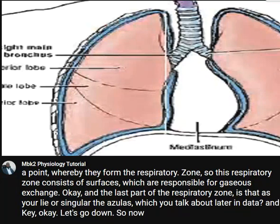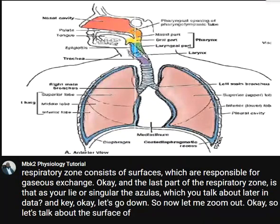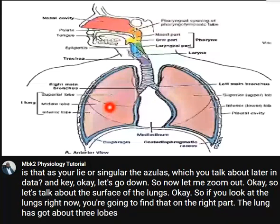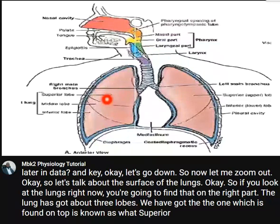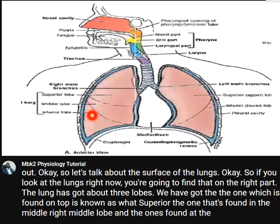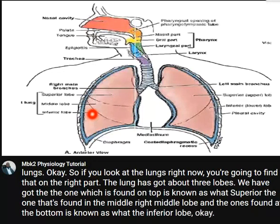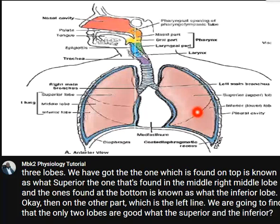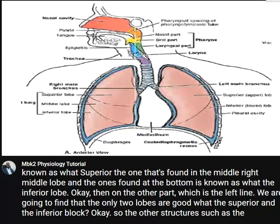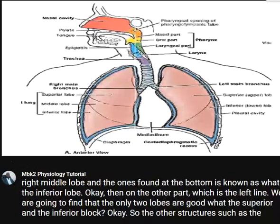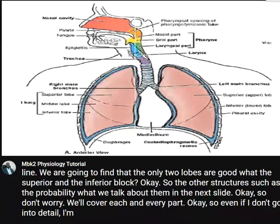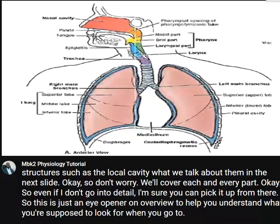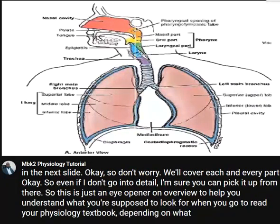Let's talk about the surface of the lungs. On the right lung you're going to find it has about three lobes: the one on top is the superior lobe, the one in the middle is the middle lobe, and the one at the bottom is the inferior lobe. On the left lung there are only two lobes: the superior and the inferior. Other structures such as the pleural cavity will be covered in the next slide. This is just an overview to help you understand what to look for when you read your physiology textbook.